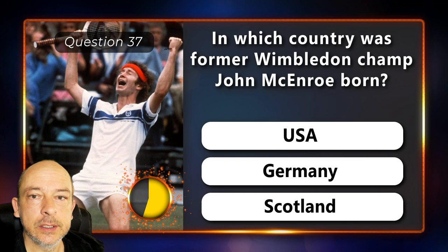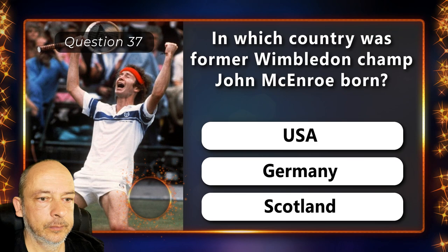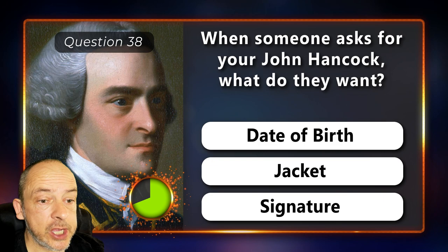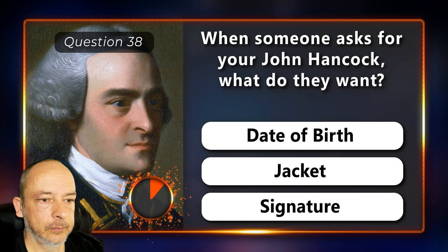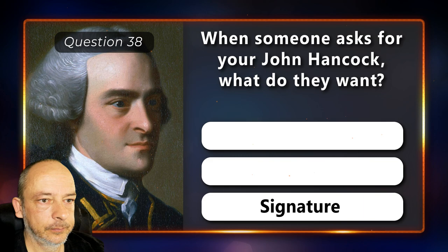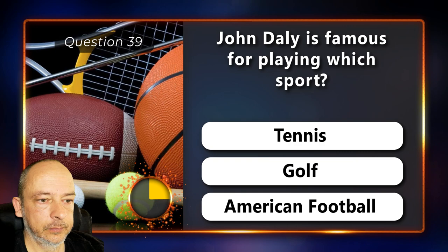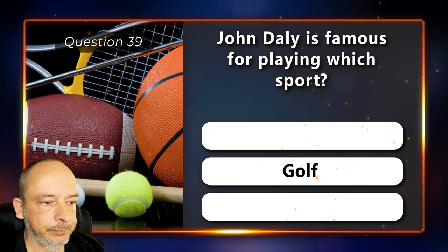Question 37: In which country was former Wimbledon champ John McEnroe born? USA, Germany or Scotland? He was born in Germany. Question 38: When someone asks for your John Hancock, what do they want? Your date of birth, your jacket or your signature? They want your signature. Question 39: John Daly is famous for playing which sport? Tennis, golf or American football? The answer is golf.